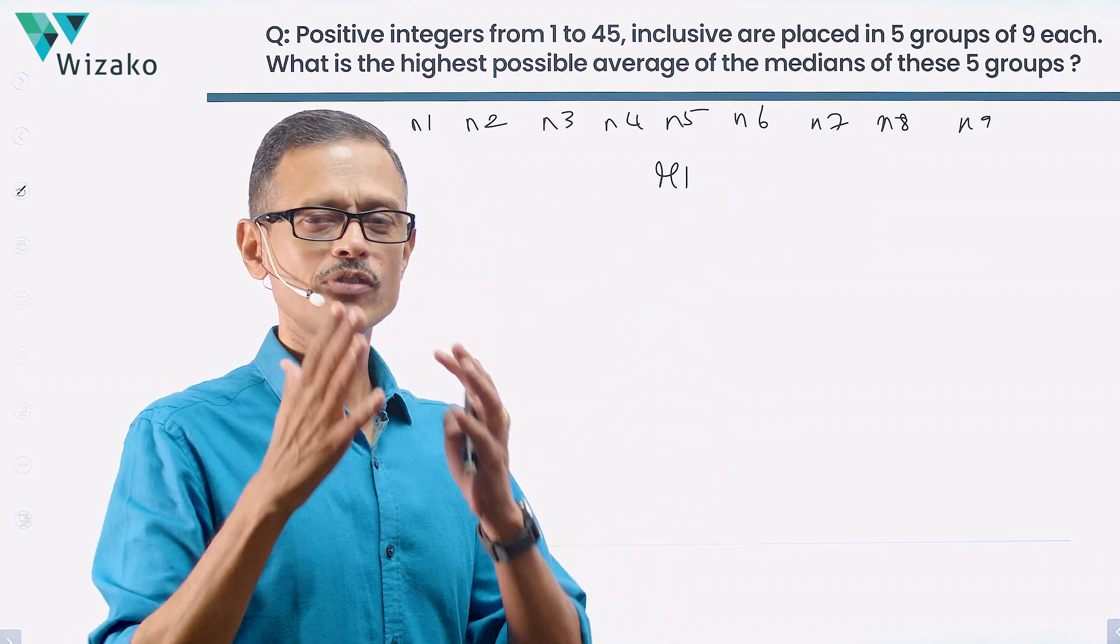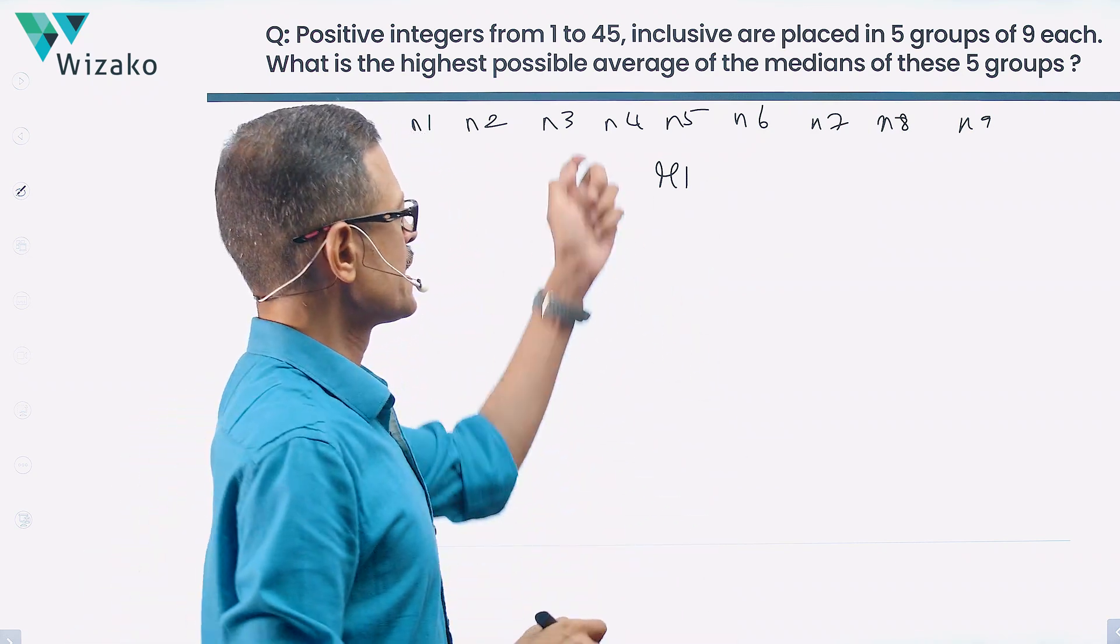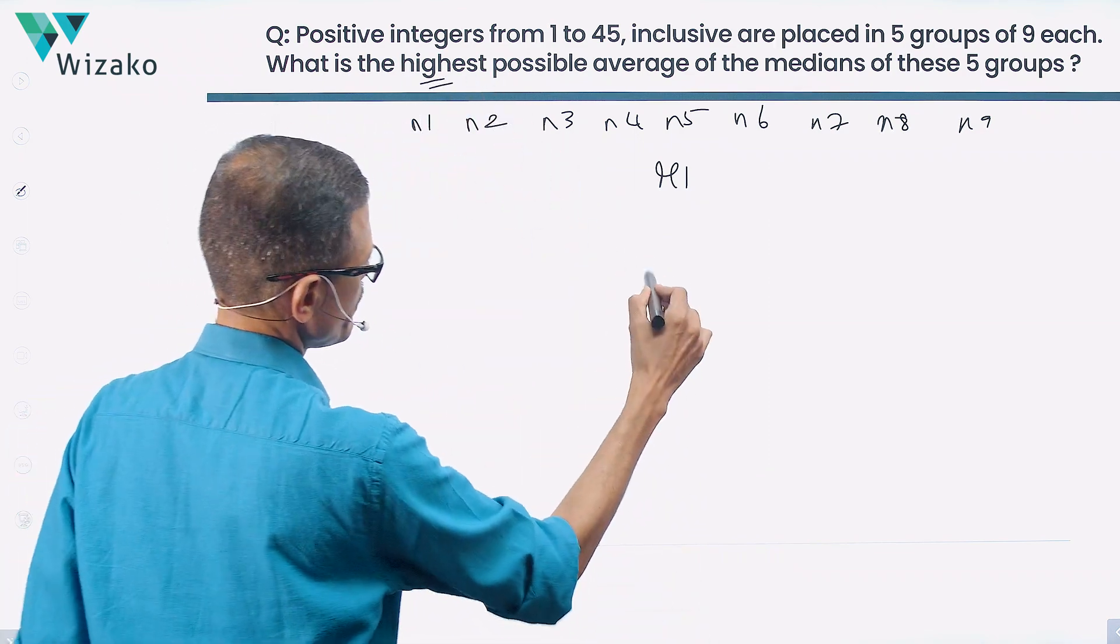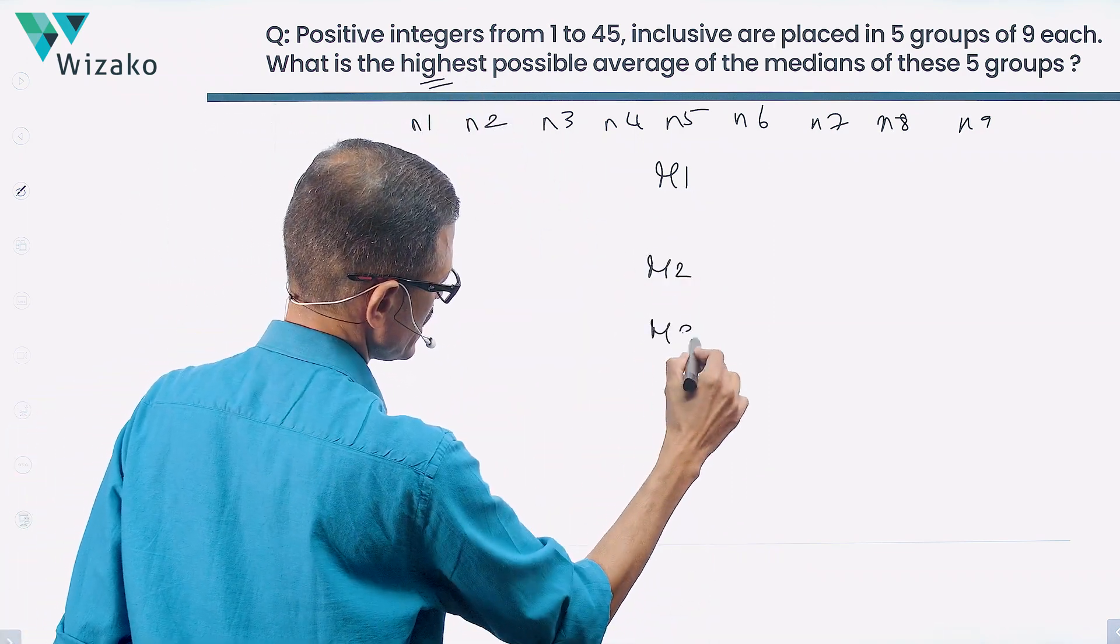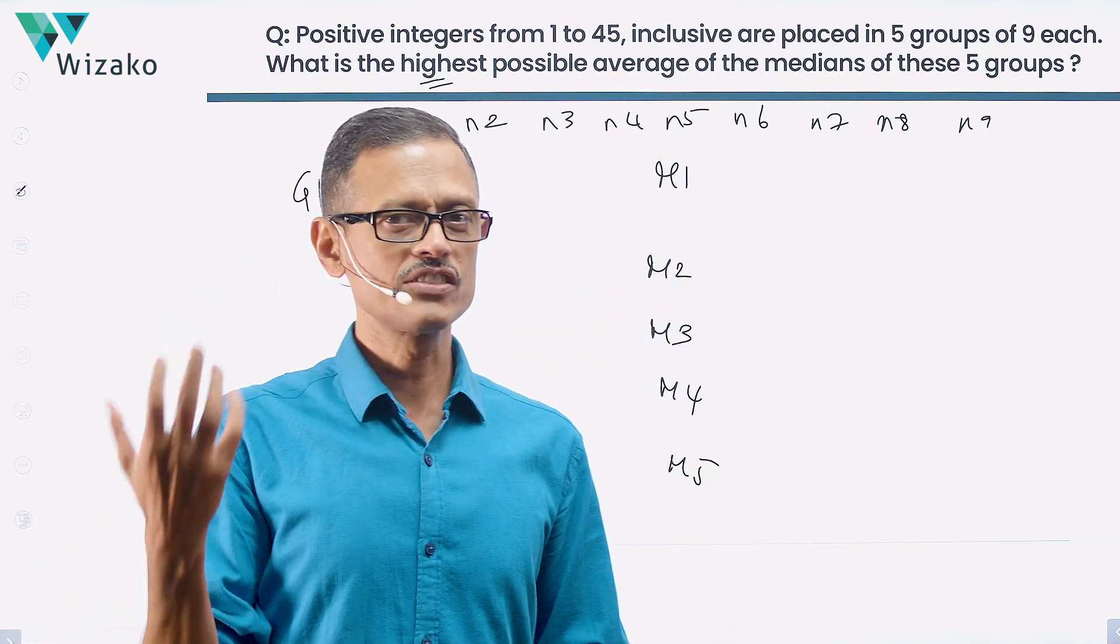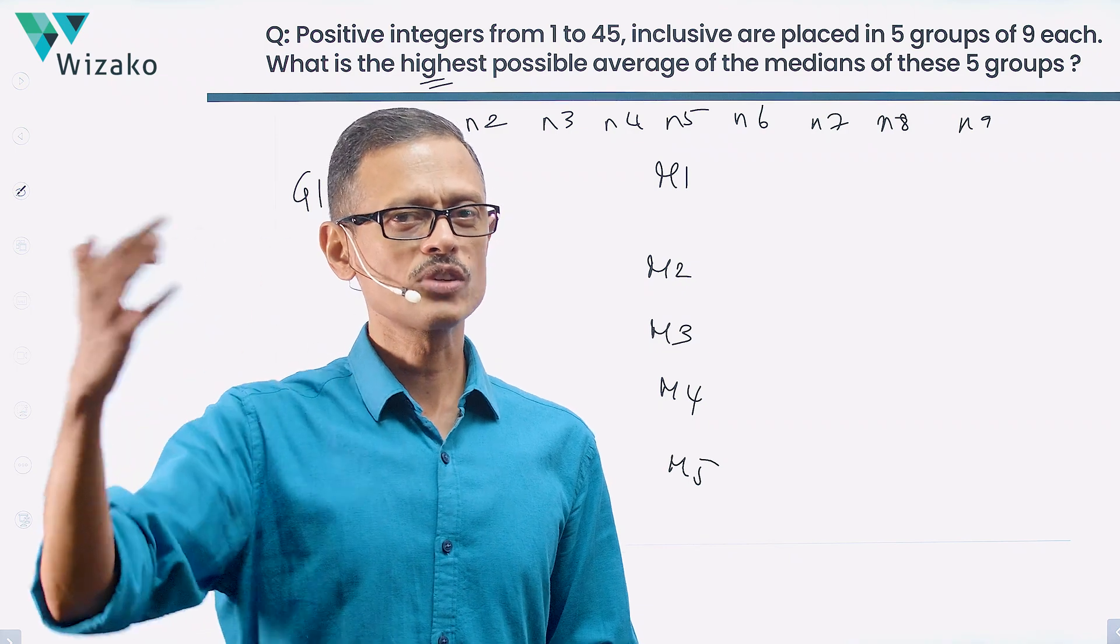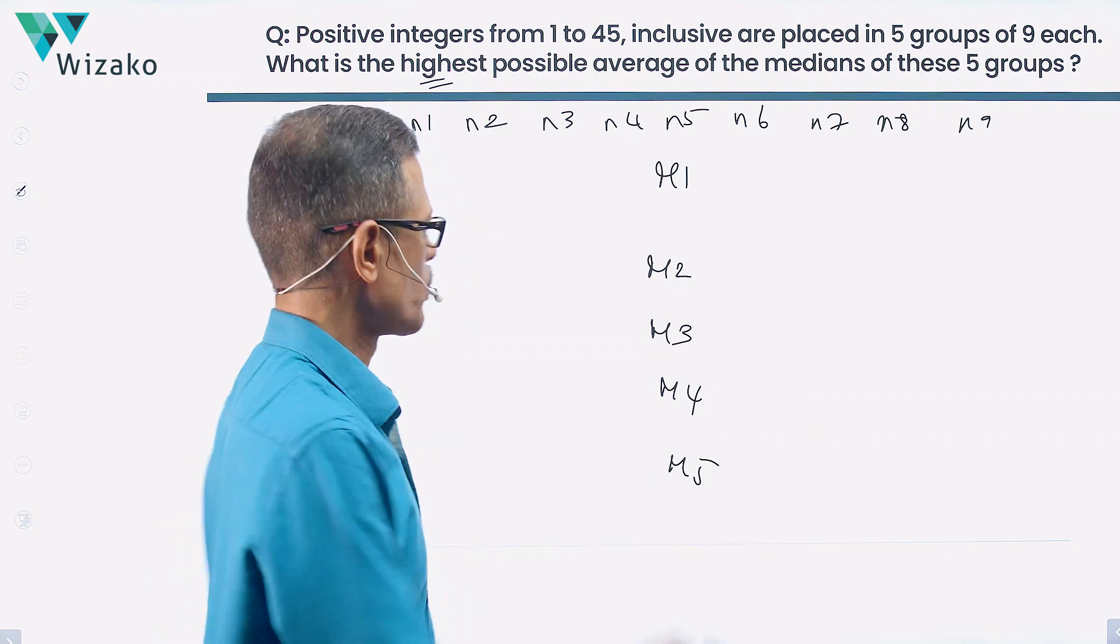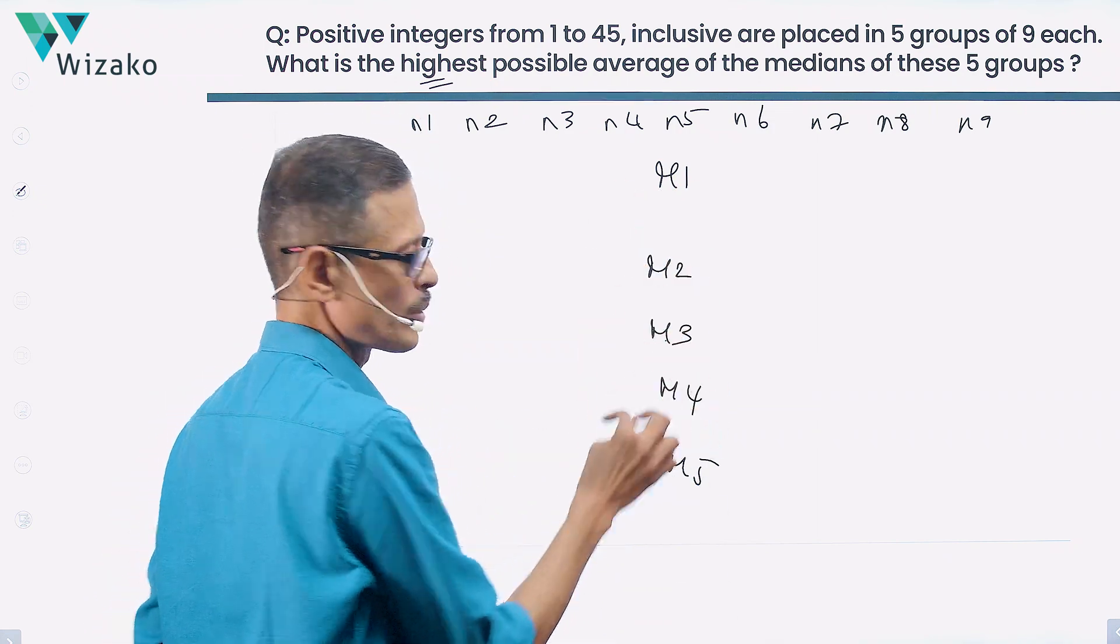It's quite evident if you want the highest possible average for each of these things. Let's call the medians to be M1, M2, M3, M4, M5. You find the highest possible value for the medians of each of these groups. Then the average is also concomitantly going to be the highest possible average. So we want to maximize M1, M2, M3, M4, M5.